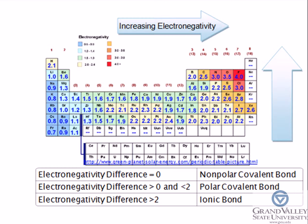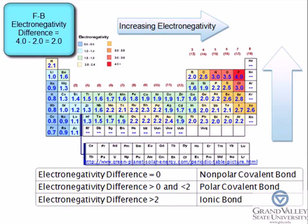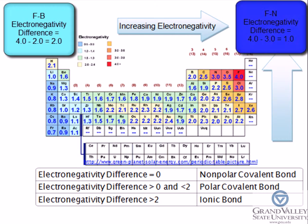In BF₃, the electronegativity difference between fluorine and boron is 2.0. For NF₃, the electronegativity difference between fluorine and nitrogen is 1.0.